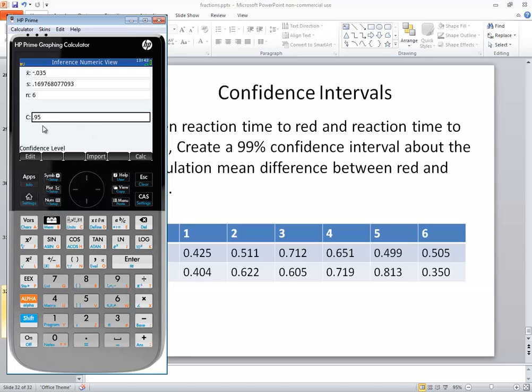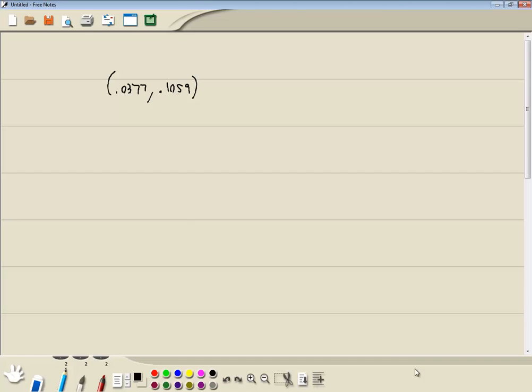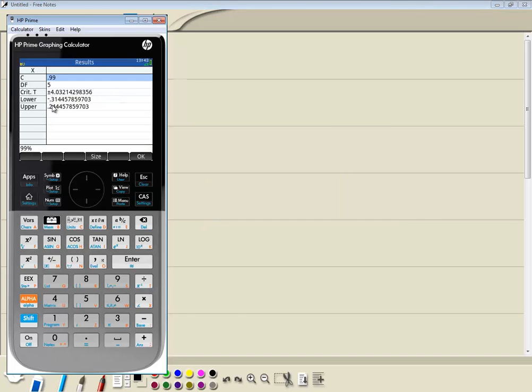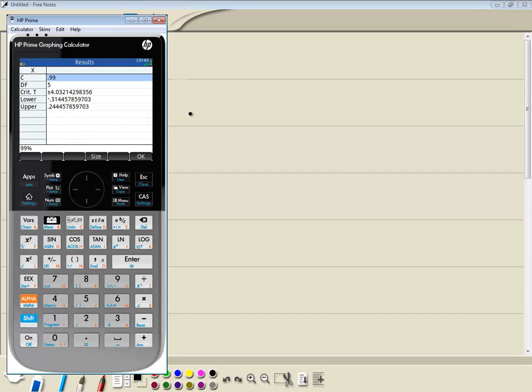Create a 99% confidence interval. So here I'm going to put in my 0.99, enter. And I'm going to choose calculate. And lower and upper is going to be our answer. Now let me get over here and write this down. I'll take it to two decimal places I get. Negative 0.31, comma, 0.24.